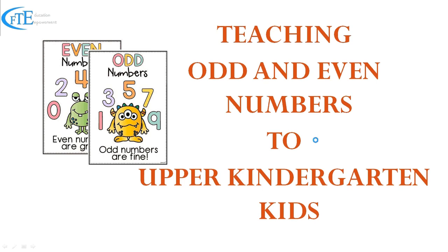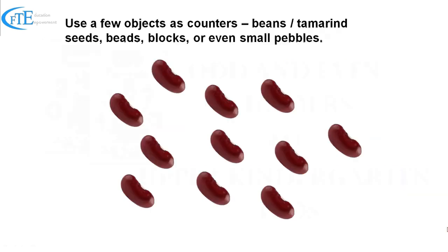Teaching odd and even numbers to upper kindergarten students. Use a few objects as counters: beans, tamarind seeds, blocks, or even small pebbles.